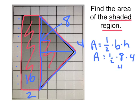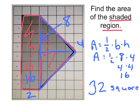Well half of eight is four times four is sixteen. So we've got to put sixteen together with sixteen to get a total area of thirty-two square units.